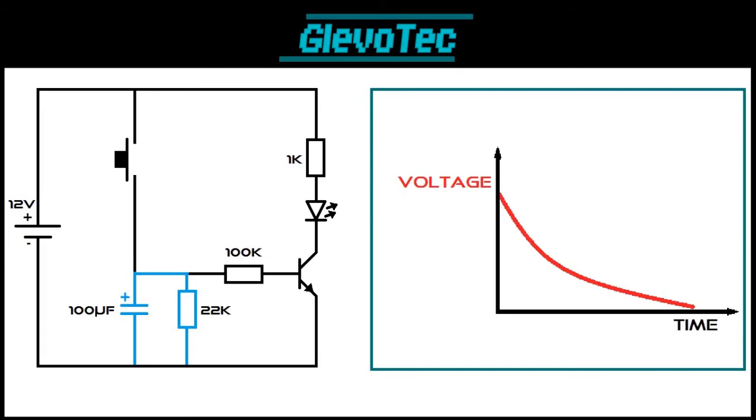The voltage of a discharging capacitor looks like this. It all depends on when the voltage reaches below the 0.7 volts. With a larger capacitor or larger resistor it takes longer. A smaller capacitor or smaller resistor will result in a shorter time.